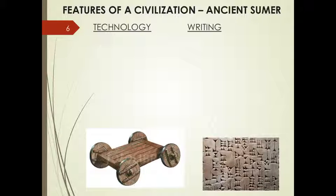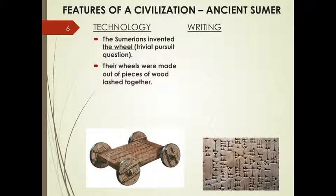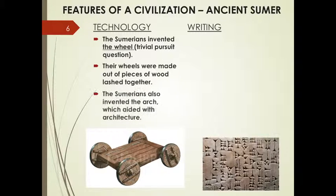Finally, we have technology and writing. Civilizations must have advanced technology and a writing system. The Sumerians invented the wheel — someone had to invent it, and it was the ancient Sumerians. Their wheels were made out of pieces of wood lashed together with bars and screws, so it was not a single object but pieces assembled together. The Sumerians also invented the arch, which aided with architecture and was later perfected by the Romans. But the main thing Sumerians are known for is inventing the wheel — imagine our life without it.